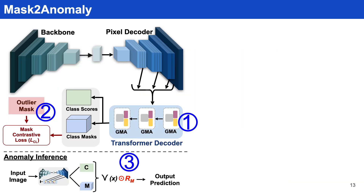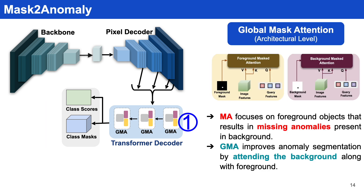So we introduce Mask2Anomaly, which has the structure of Mask2Former but with three important improvements. Firstly, we introduce global mask attention at the architectural level. Global mask attention improves anomaly segmentation by attending to both foreground and background, whereas mask attention only attends to foreground, which results in missing anomalies.